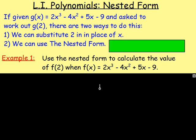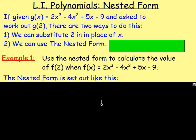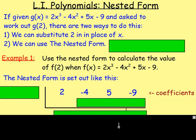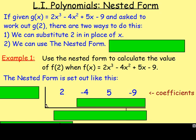Example 1: Use the nested form to calculate the value of f of 2 when f of x equals this function here. So, the nested form is set out like this. This is a way of working out what f of 2 would be. What you do is you take your coefficients of the x terms. So, take the coefficient of the x cubed, the x squared, the x, and then the number on the end. And you set them out like this, just with an L shape.